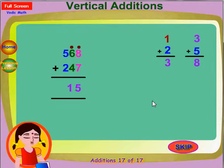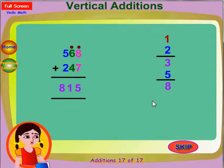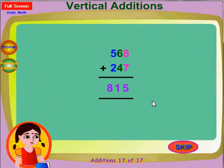Now add 1 and 2, you get 3. Add 3 and 5, that is 8. Write it in the hundreds place in the answer. So the final answer is 815.